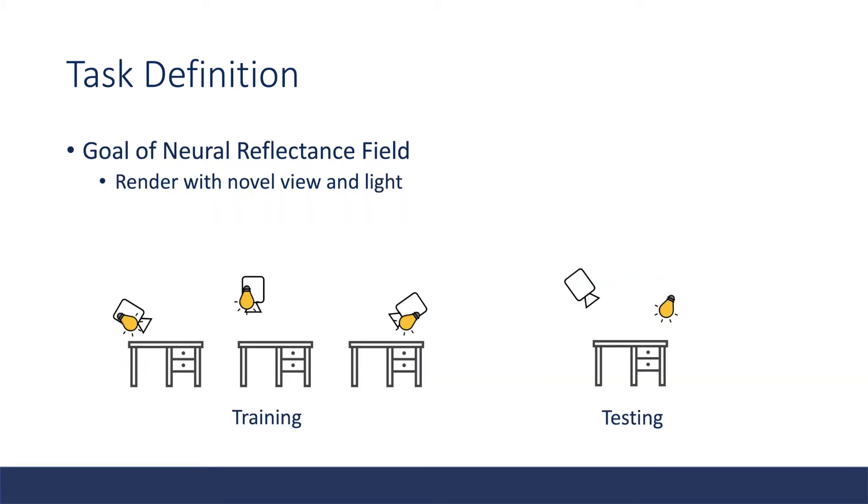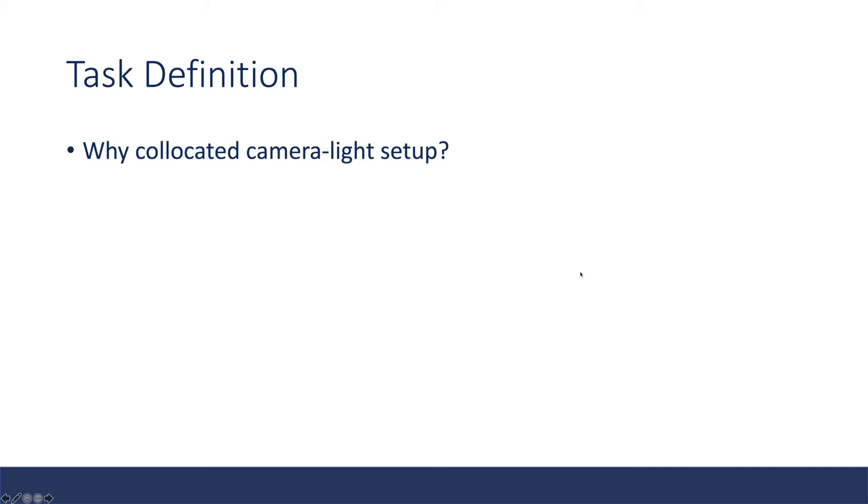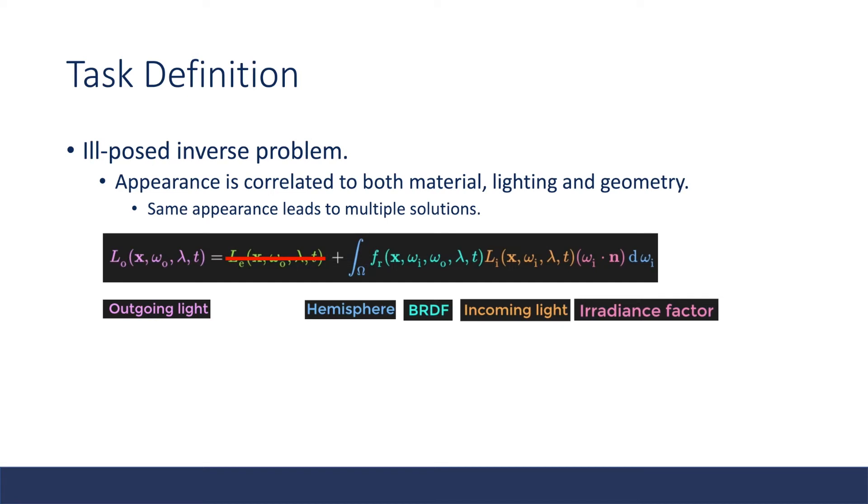The goal of a neural reflectance field is to do novel view synthesis and relighting. And here comes the question: why do we want to use a co-located camera light setup?